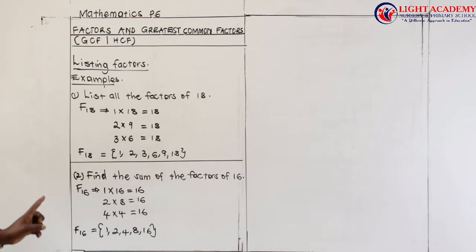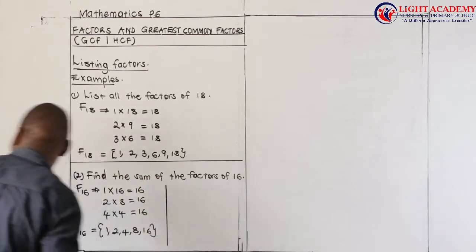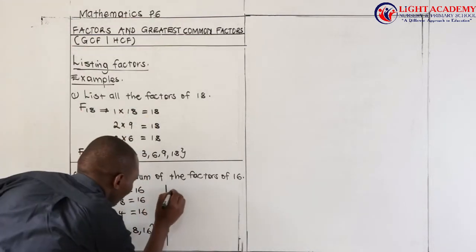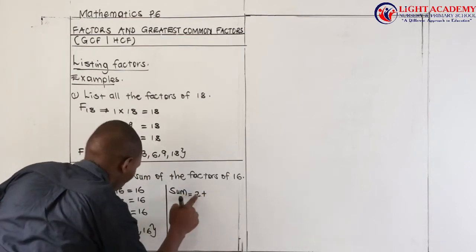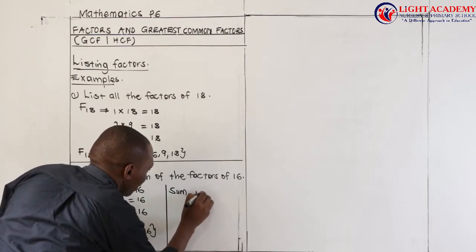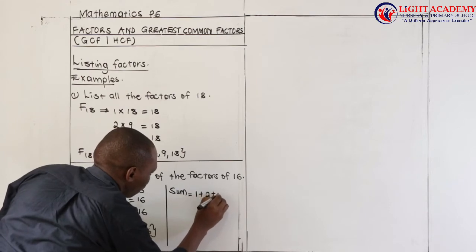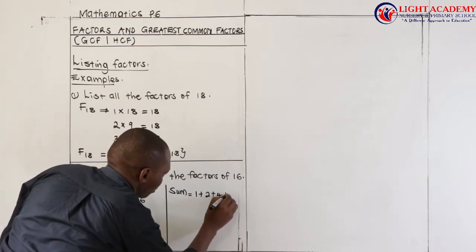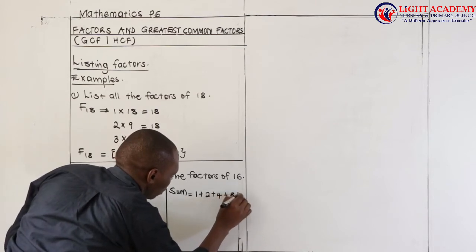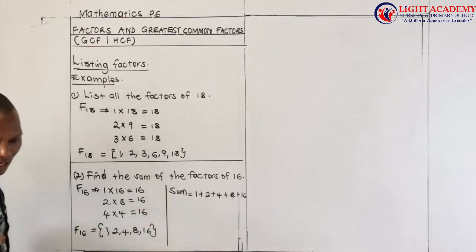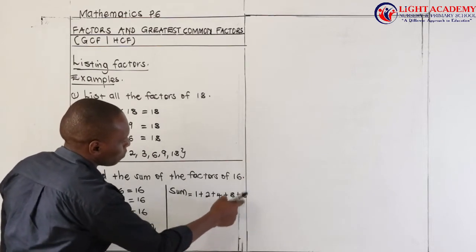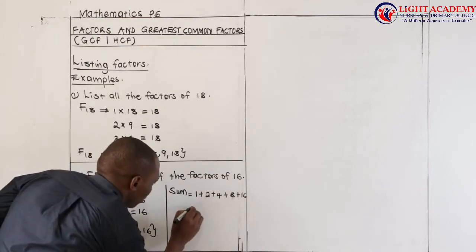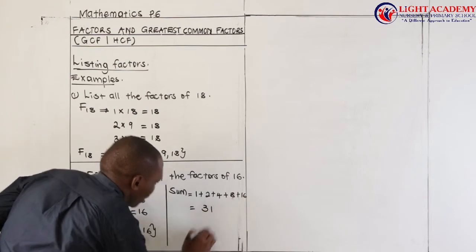I have listed all the factors of 16, but I have not answered the question completely. They wanted us to get the sum of the factors. So I will now come and get the sum of those factors I have just listed. We shall add them: 1 plus 2 plus 4 plus 8 plus 16. When we add all of these, we get: 1 plus 2 is 3, plus 4 is 7, plus 8 is 15, plus 16 gives us 31. So the sum of all the factors of 16 is 31.